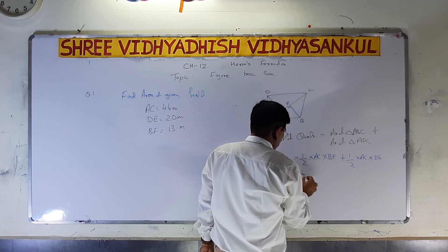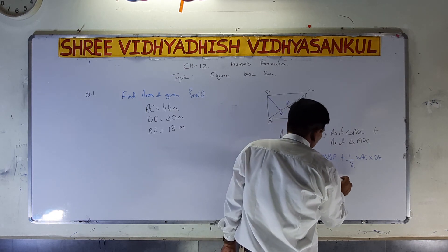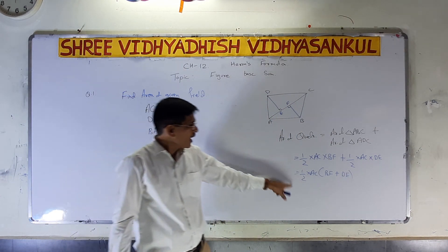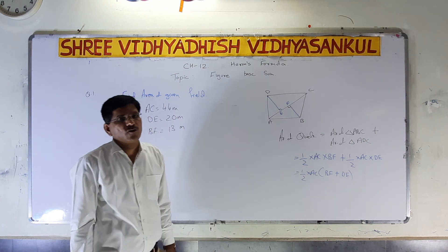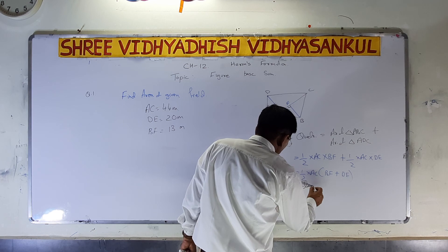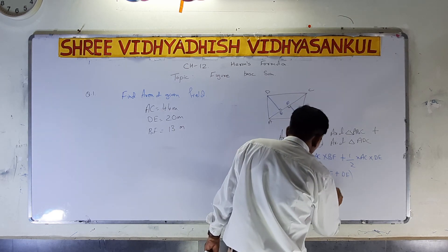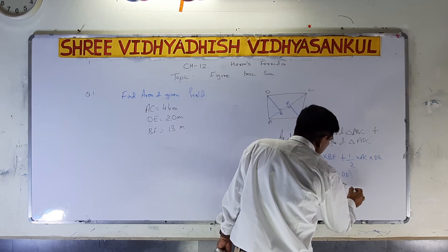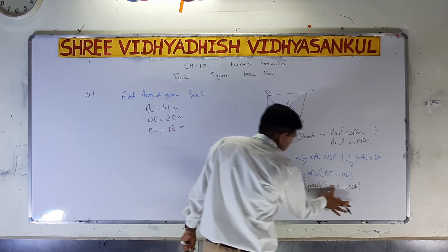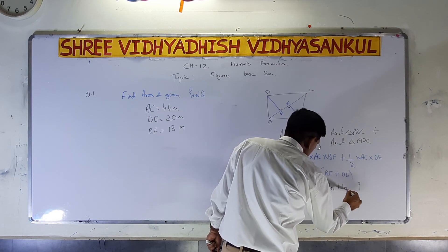For triangle ADC, the base is the same. So it is half into AC into DE. Taking the common factor half into AC outside, we get half into AC into (BF plus DE). So always remember: area of quadrilateral equals half into diagonal into the sum of perpendiculars, that is H1 plus H2.